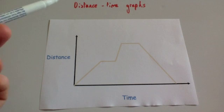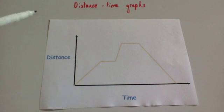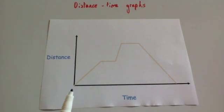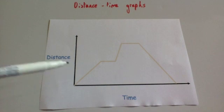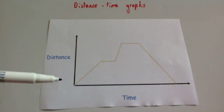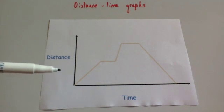In this video we're going to look at distance-time graphs. Here's an example of a distance-time graph. A distance-time graph will have time along the horizontal axis and the distance from a set point along the vertical axis.